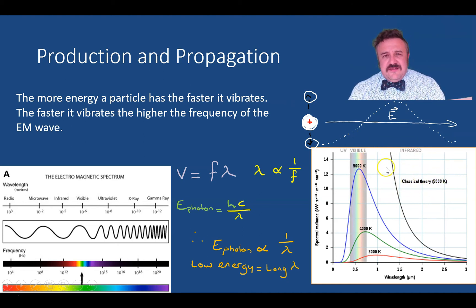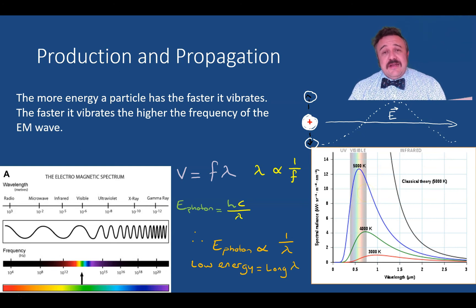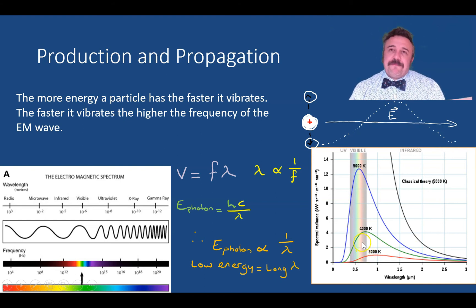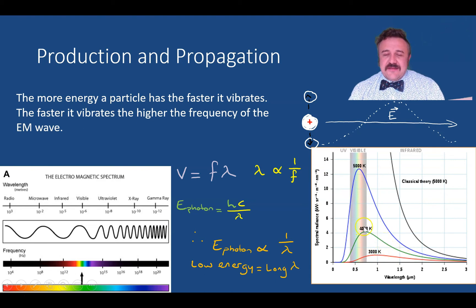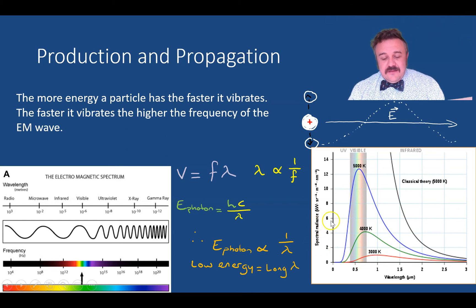This brings us to one of my favorite graphs: the black body radiation graph. Ignore the classical theory for now — we'll get to the ultraviolet catastrophe later. A black body is a body that does not reflect light; it only emits light. It's a non-intuitive graph because the line represents measurements on both axes at different temperatures — 3000 K, 4000 K — showing how much radiation is pumped out at each wavelength.